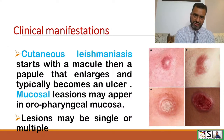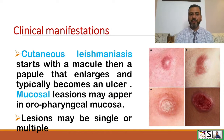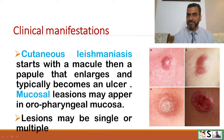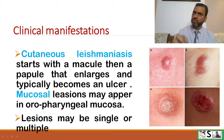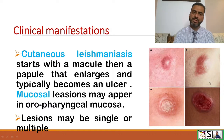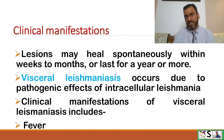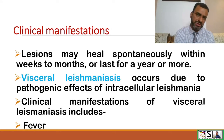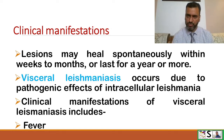Clinical manifestations: Cutaneous Leishmaniasis starts with a macule, and then a papule emerges, enlarges, and typically becomes an ulcer. The mucosal lesions may appear in the oropharyngeal mucosa. Lesions may be single or multiple. These lesions may heal spontaneously within weeks to months, or sometimes lasting even years or more.